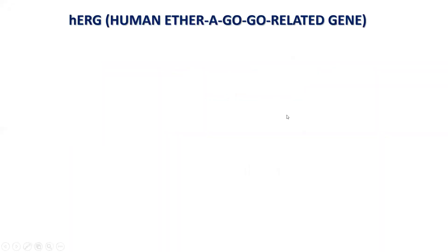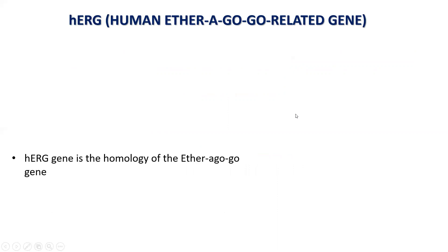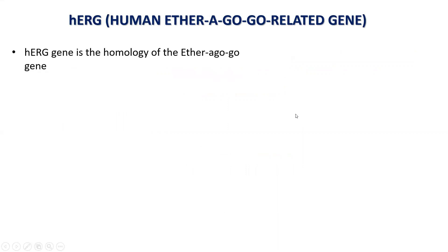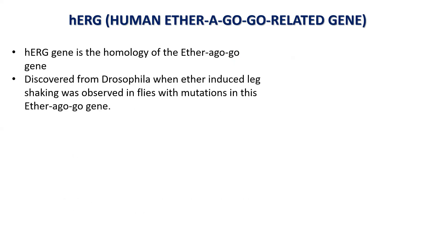So what is this HERG gene? HERG gene is the homolog of the ether-a-go-go gene. The ether-a-go-go gene was first found in Drosophila — it was discovered when ether was induced into flies, leg shaking was observed, and that was because of a mutation in the ether-a-go-go gene.